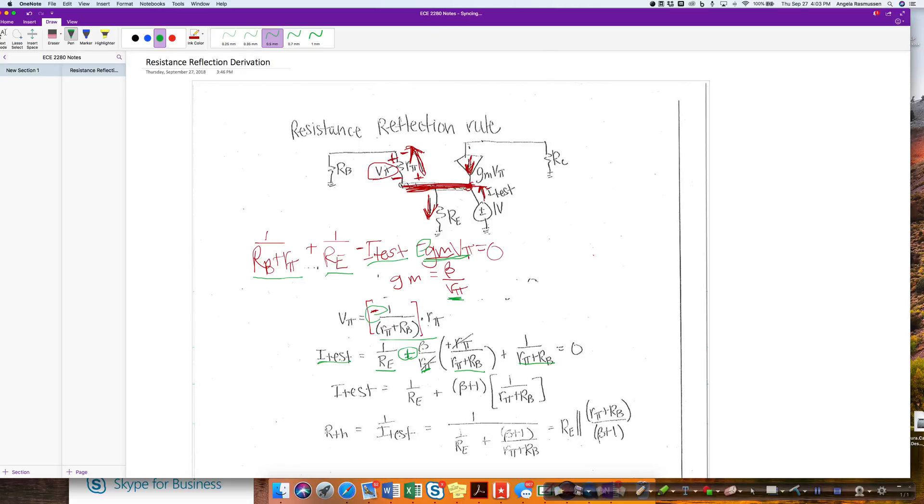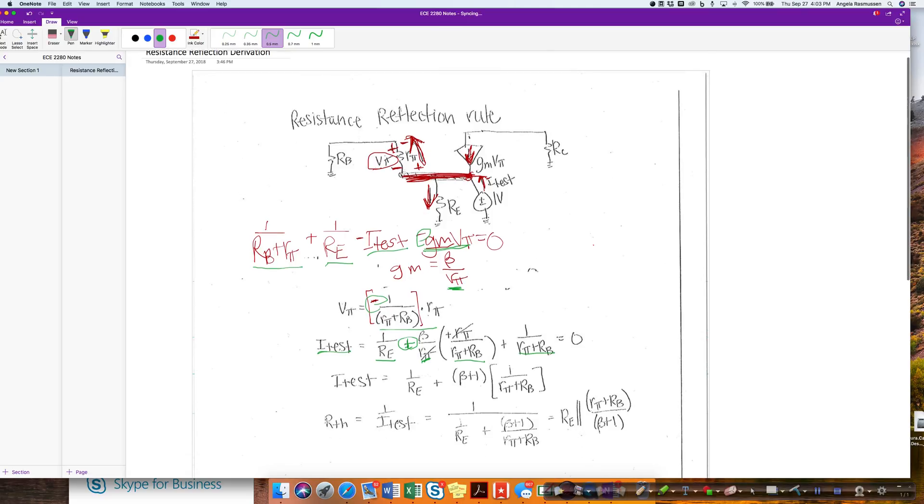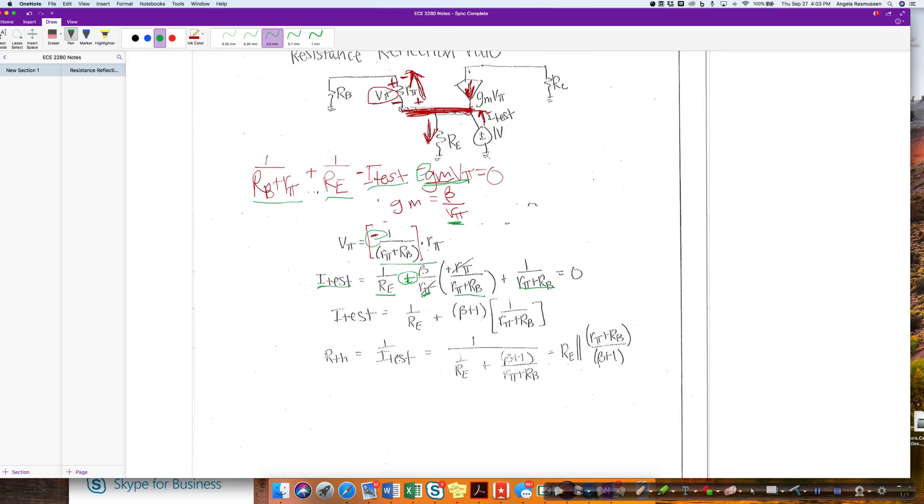I then combine all of the rest of the quantities and I end up with rth, which is 1 over i test. And that looks like this. And now I note that this is a 1 over 1 over Re plus 1 over rpi plus rb over beta plus 1.